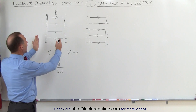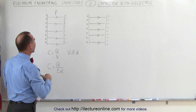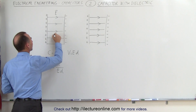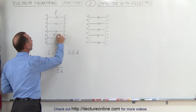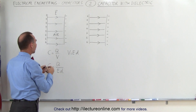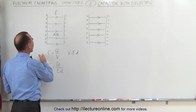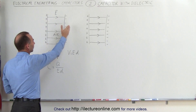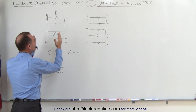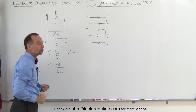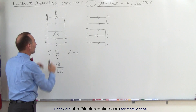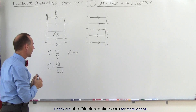So here we have a capacitor. Let's assume that we have air between the plates, and the capacitance is defined as the amount of charge that collects on the plates divided by the amount of voltage we drive across or hold across the capacitor plates.